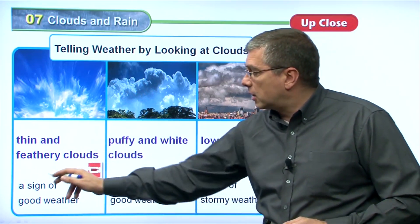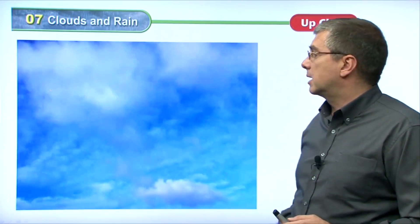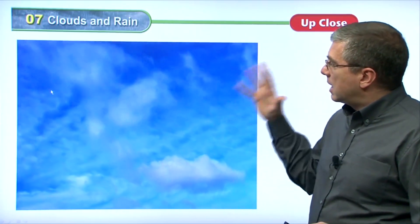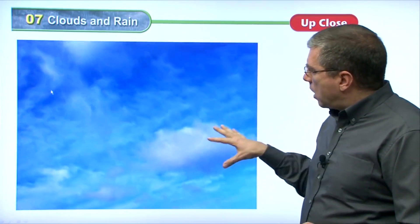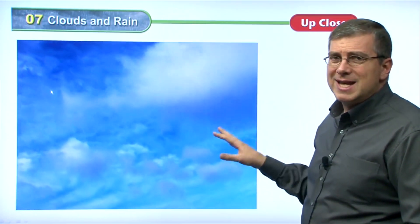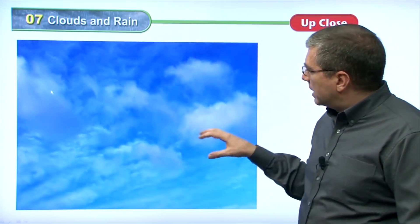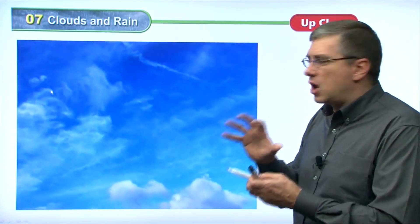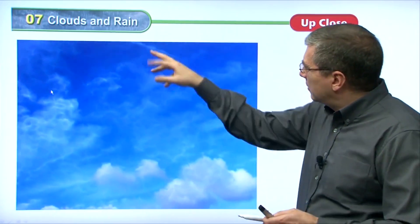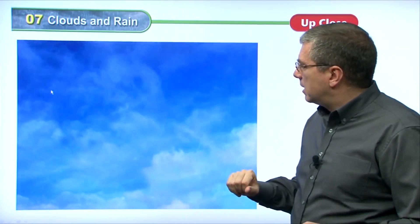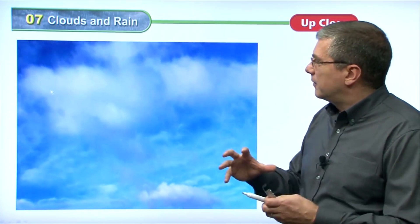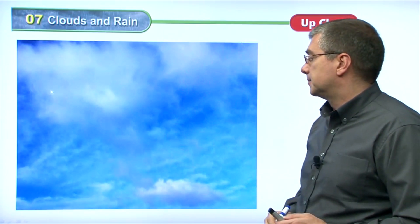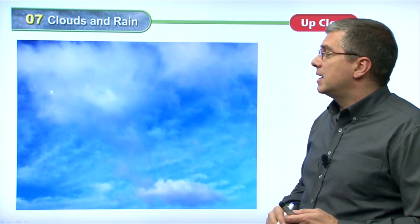Looking at the video, we see thin and feathery clouds with the blue sky. There's not a lot of water vapor — just a little bit passing along. The clouds look very thin, kind of feathery, not very solid or thick. They're very white in color. Those are thin and feathery clouds, a sign of good weather.